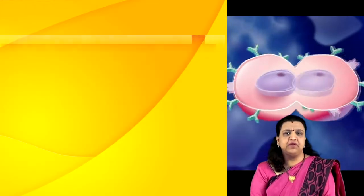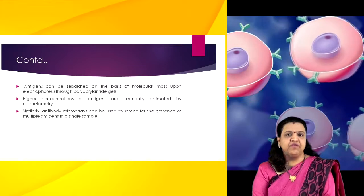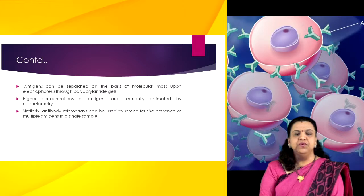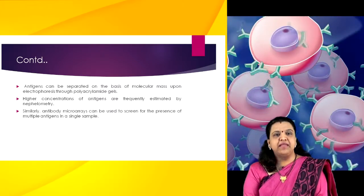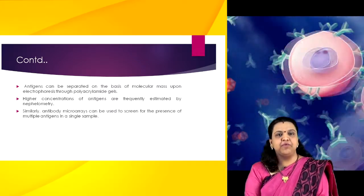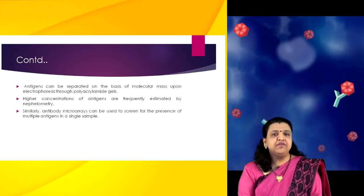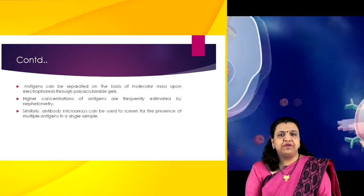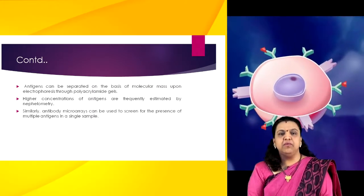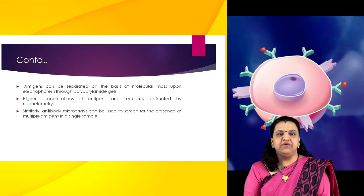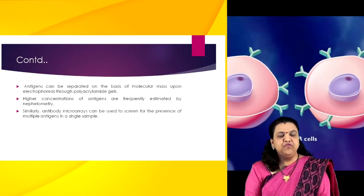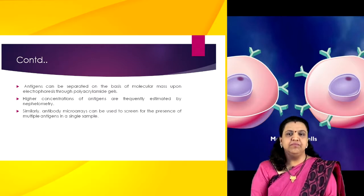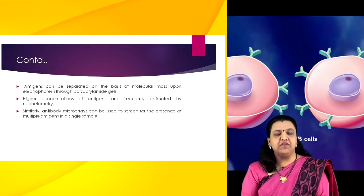Antigens can be separated on the basis of molecular mass upon electrophoresis through polyacrylamide gels. Antigens separated in this way can be blotted onto nitrocellulose membrane and their presence detected by probing with suitable antibodies. Higher concentrations of antigens are frequently estimated by nephelometry. Protein microarrays containing thousands of proteins immobilized on solid support can be probed with antibody for simultaneous screening of many antigens. Similarly, antibody microarrays can be used to screen for the presence of multiple antigens in a single sample.